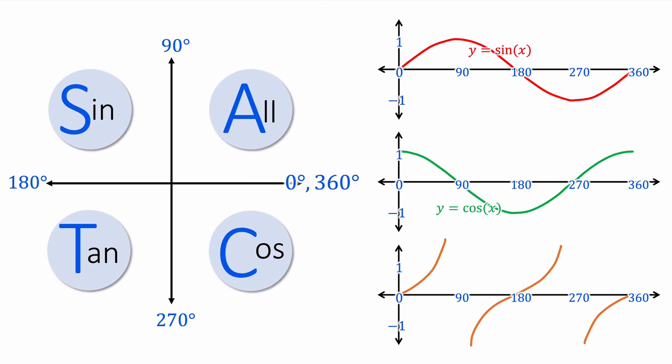Just to remind you what's happening here: In the first quadrant, between 0 and 90, all three graphs are positive. Now, in the second quadrant, between 90 and 180, only the sin graph is positive. So if the sin graph is going to have a second solution when it's positive, it's going to have a second solution between 90 and 180.